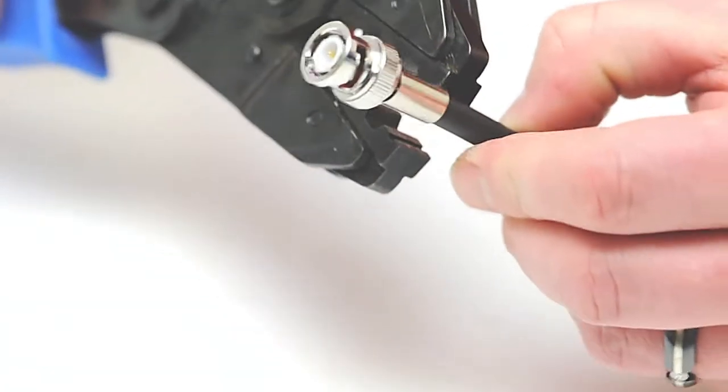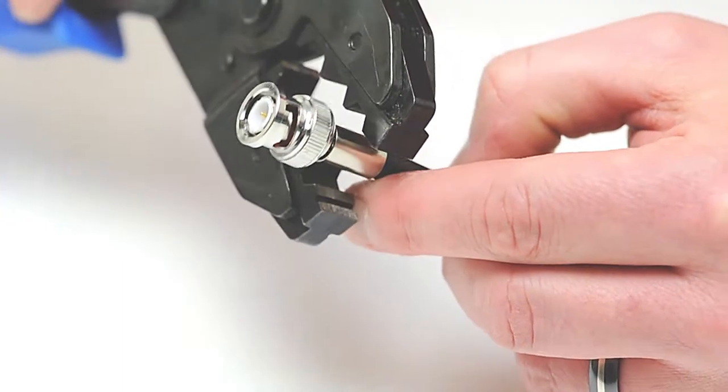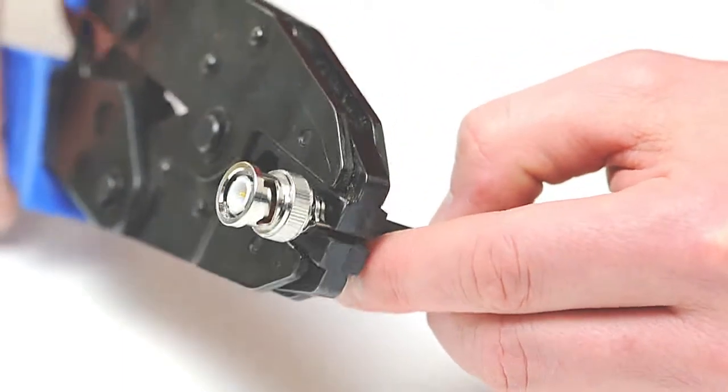Take your crimp tool and crimp the ferrule onto the jacket. This will create a secure connection.